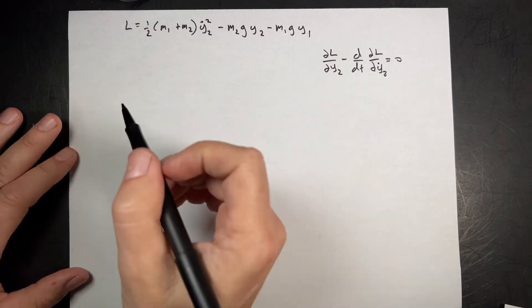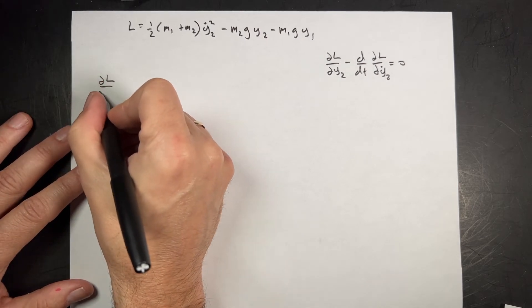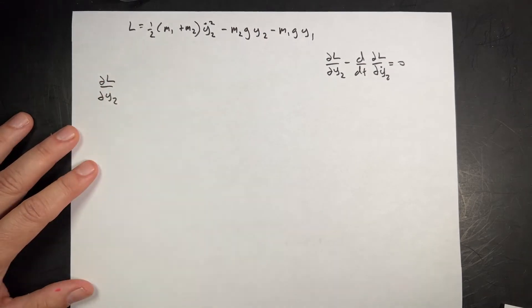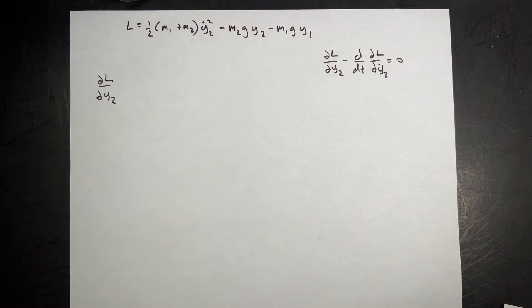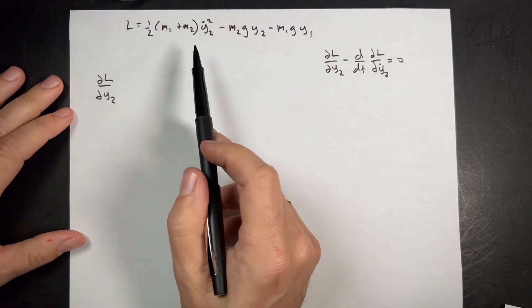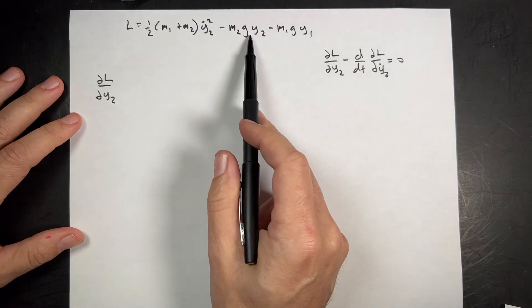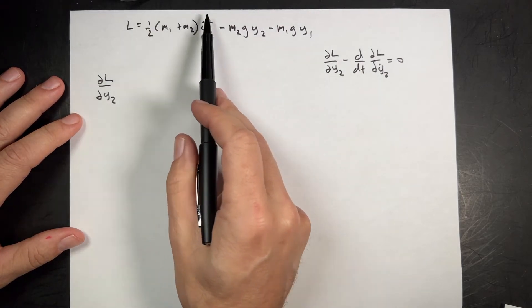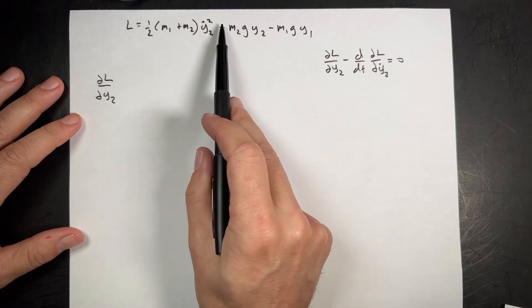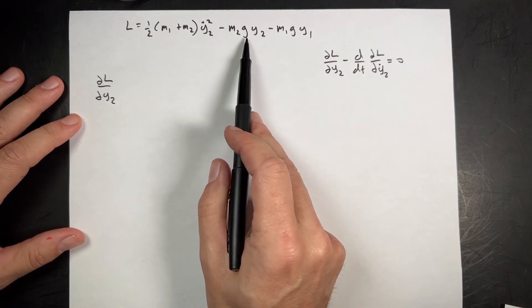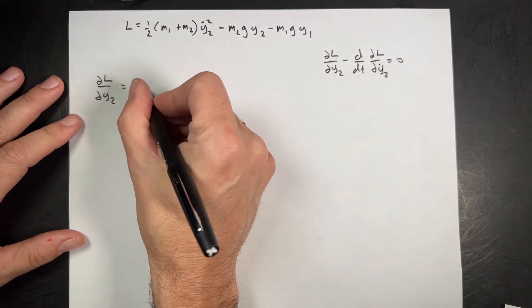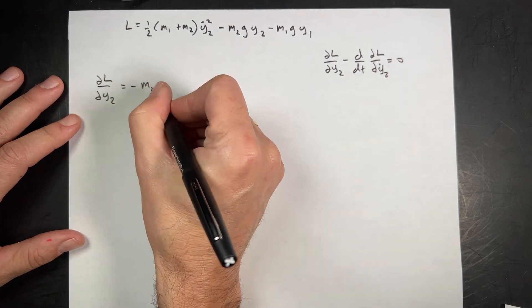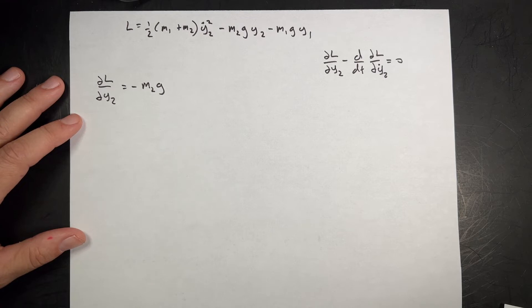As a reminder, the partial of L with respect to y2 minus the derivative with respect to time of the partial of L with respect to y2 dot equals zero. Let's start with the first part: the partial of L with respect to y2. This is a partial derivative, so I only treat everything as a constant except for y2. Where's y2? It's only one place right there. So I just get negative m2 g.